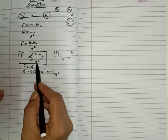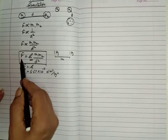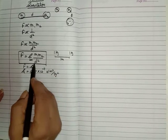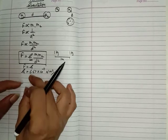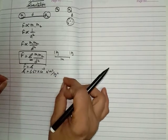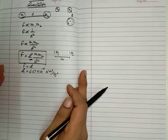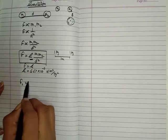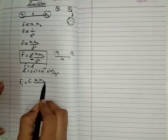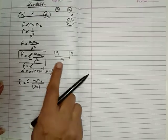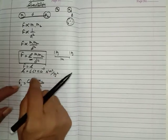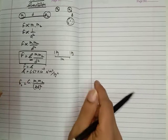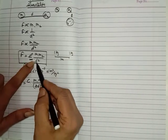What will happen if we change the distance between the two objects? How does the force of attraction between them change? If we double the distance between them - suppose the distance between them was initially d, and we keep both objects far apart so the distance between the two objects is now two times the initial value.